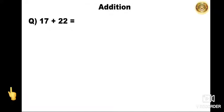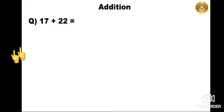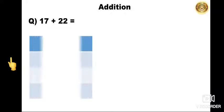Now we will revise the addition of a two-digit number. Let's take the number 17 plus 22. We can add it horizontally or vertically. So we will add vertically over here.